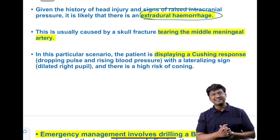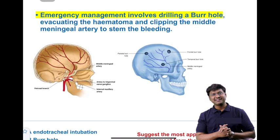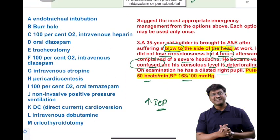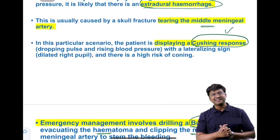The extradural hemorrhage occurs due to tearing of the middle meningeal artery. The bradycardia and raised blood pressure represent Cushing's response from raised intracranial pressure. Emergency management involves drilling a bur hole, evacuating the hematoma, and clipping the middle meningeal artery to stop the bleeding.